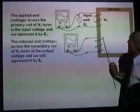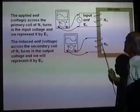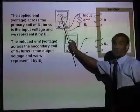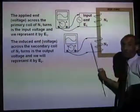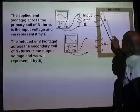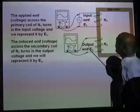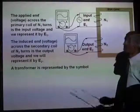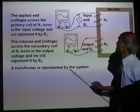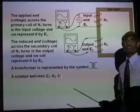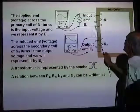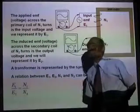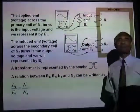E1 is the input voltage. N2 is the number of turns in the secondary and E2 is the output voltage. For a transformer there is an input voltage and an output voltage. The relation connecting E1, E2, N1, and N2 is: E1 divided by E2 equals N1 divided by N2. The transformer is represented by a standard symbol in electrical circuits.